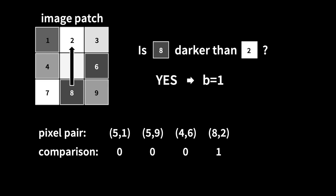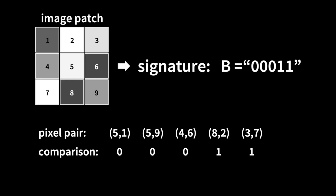If we, for example, sample 8, 2, then 8 is darker than 2, and then we would return a 1, and the same holds for 3, 7, we would also return a 1. So the signature, the bit string that would generally be generated for that image would be 0, 0, 0, 1, 1, and that would be my signature.